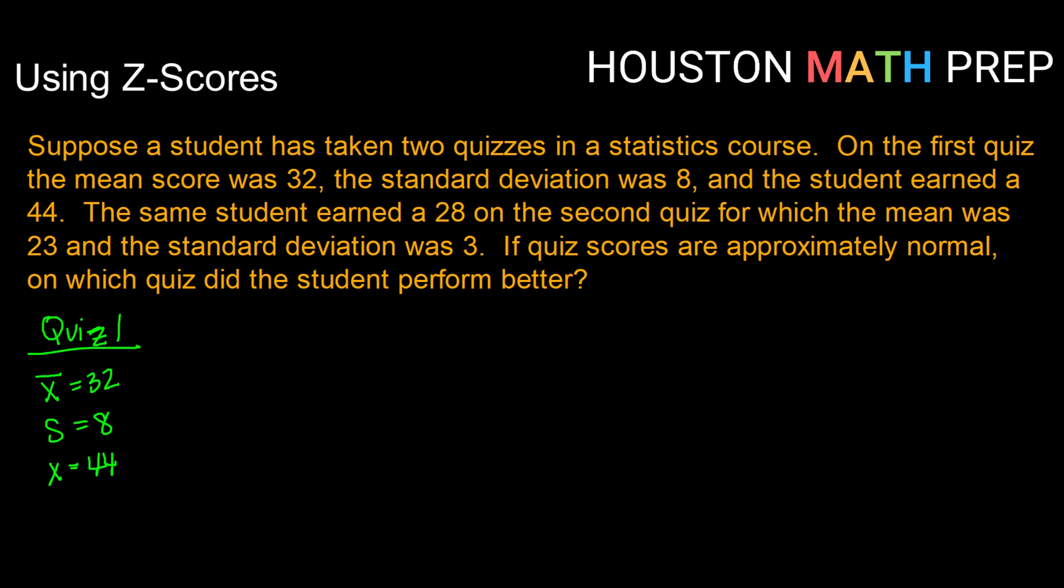On the second quiz, the student scored a 28. So that's their actual score or their actual data value. The mean was 23, and the standard deviation was 3.